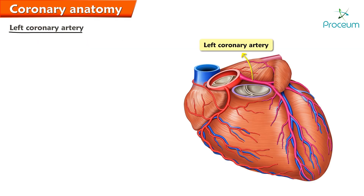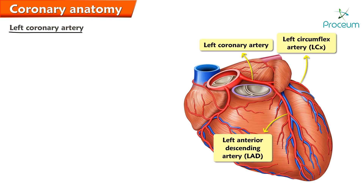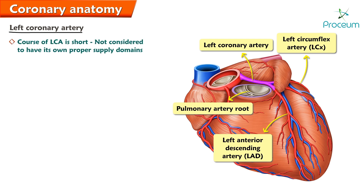The two main branches of the left coronary artery are the left anterior descending artery and the left circumflex artery. The left coronary artery passes anteriorly to the left of the pulmonary artery root and then divides into its two major branches about halfway around the left atrium. Because the course of the LCA is so short, it is typically not considered to have its own proper supply domains.